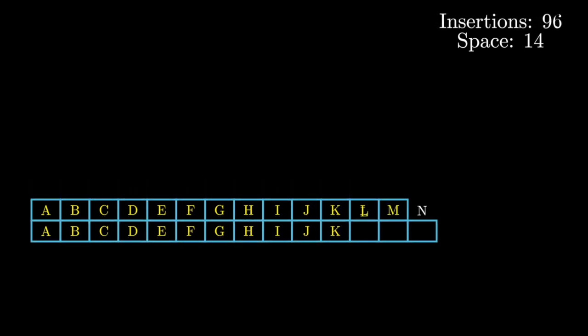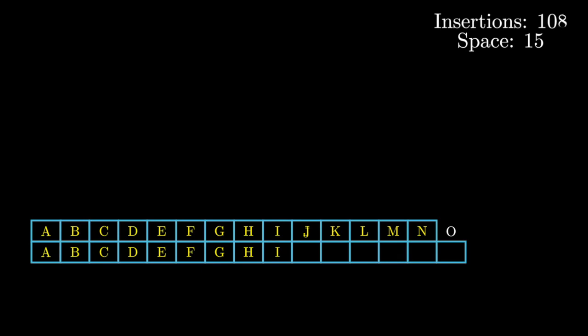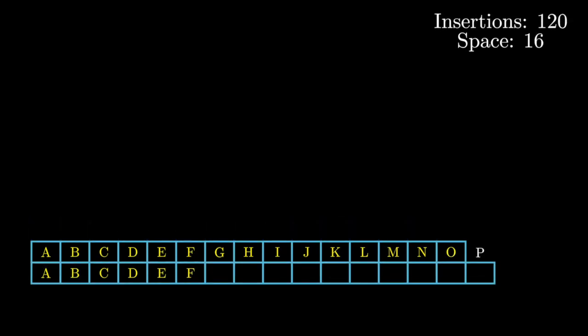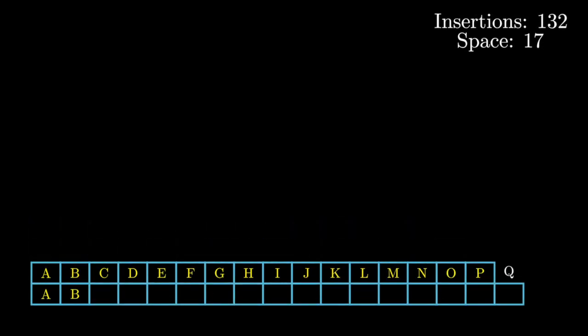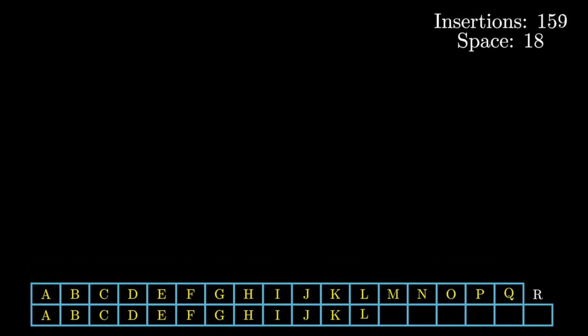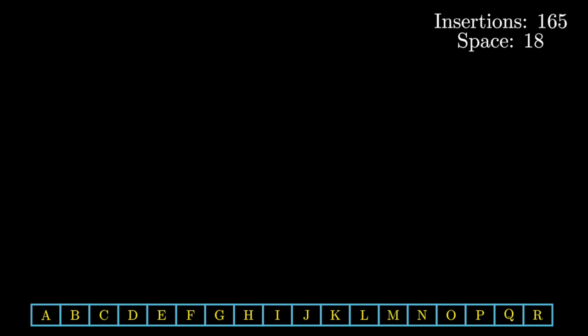One thing to note here is that I'm only going to count the final array as new space we're using, since we can easily get rid of previous arrays when we generate the new array. After 18 elements, we end up having 165 insertions and our final array uses 18 units of space.